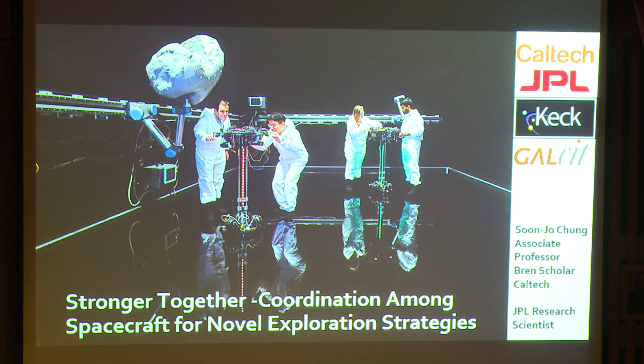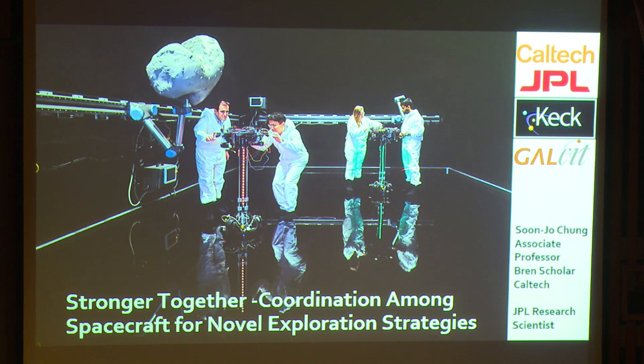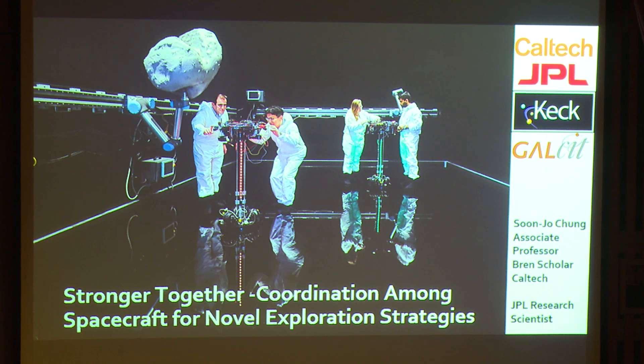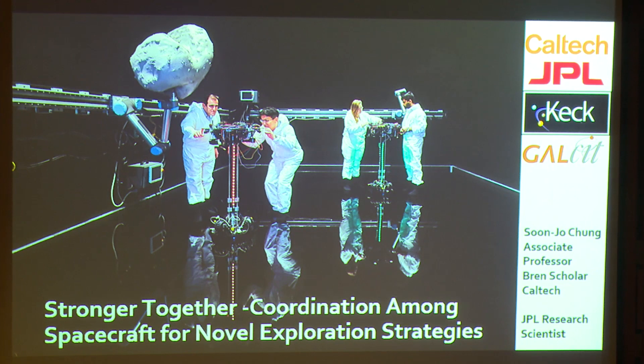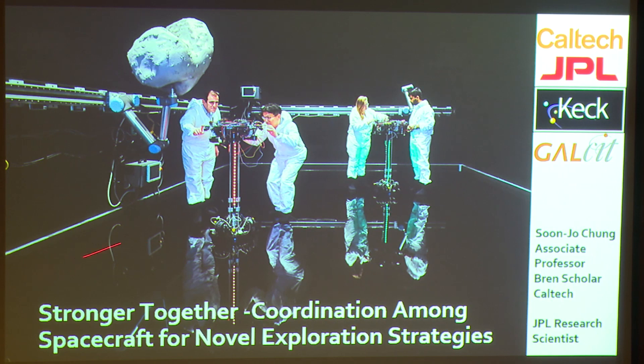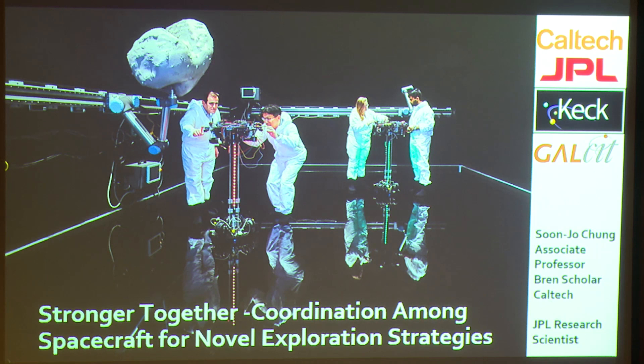This is our new spacecraft lab at Caltech. You can see a gentleman standing here without fear, just below this asteroid model. It's a very unique setup — a flat floor made of epoxy, a high-precision flat floor that can simulate frictionless motion. We have five six-degree-of-freedom spacecraft simulators. They can move up and down, and they sit on top of a spherical air bearing that can simulate three-degree-of-freedom attitude motion, and they can freely translate, completing a six-degree-of-freedom motion. We have a very powerful onboard computer.